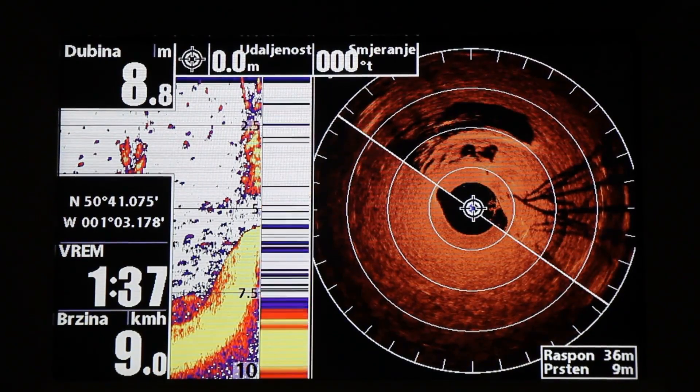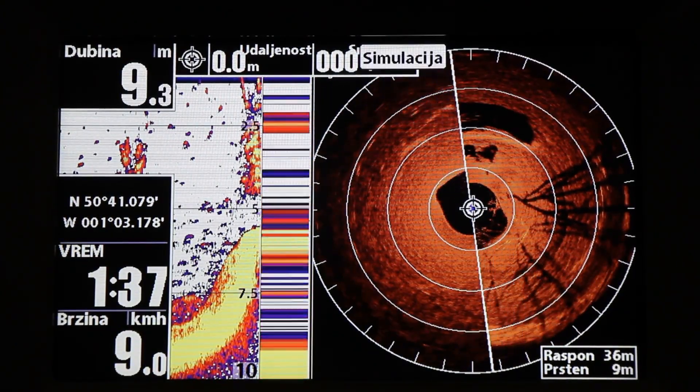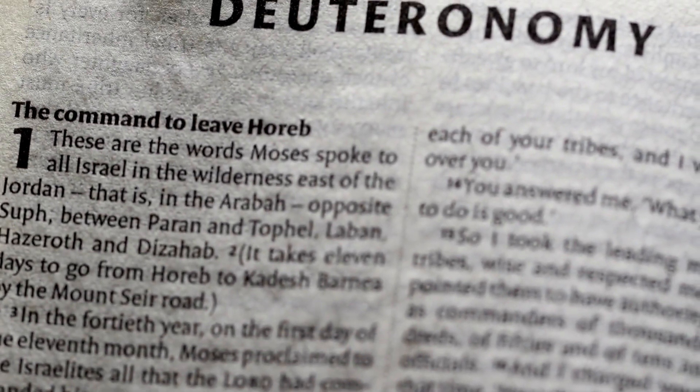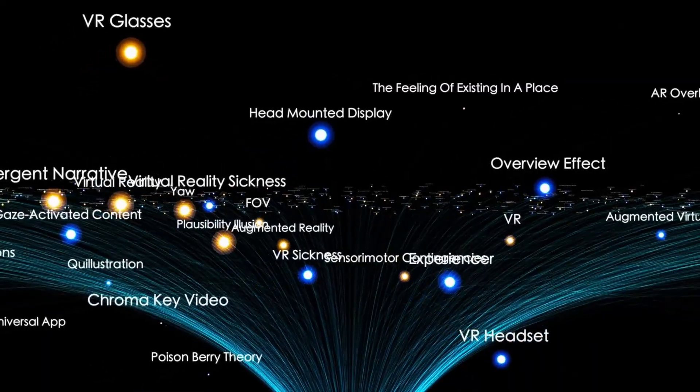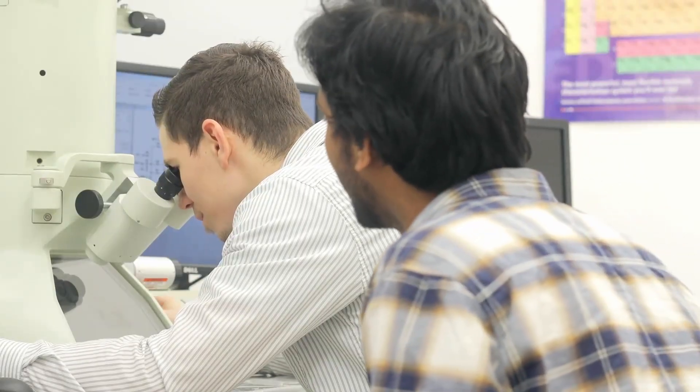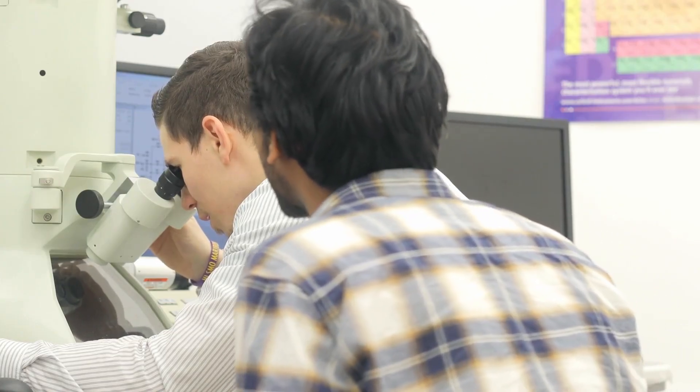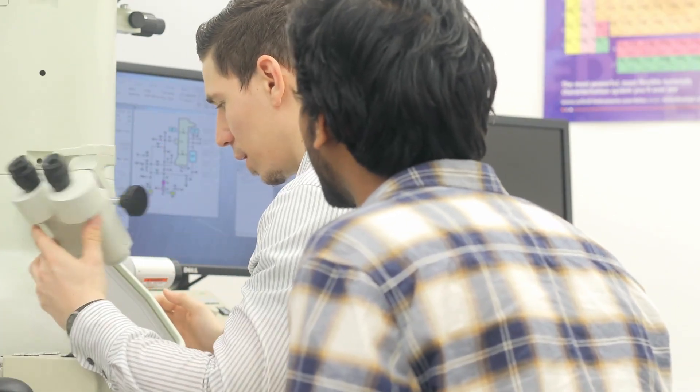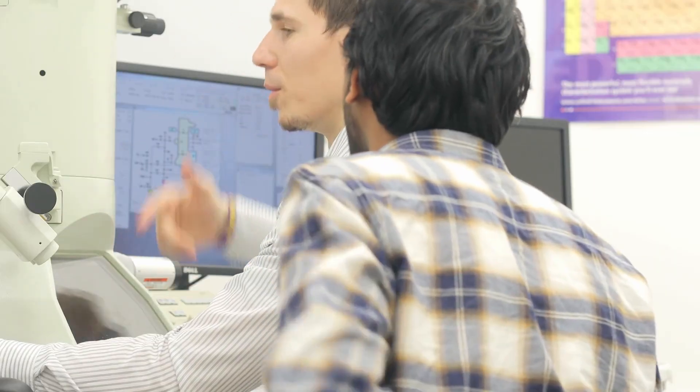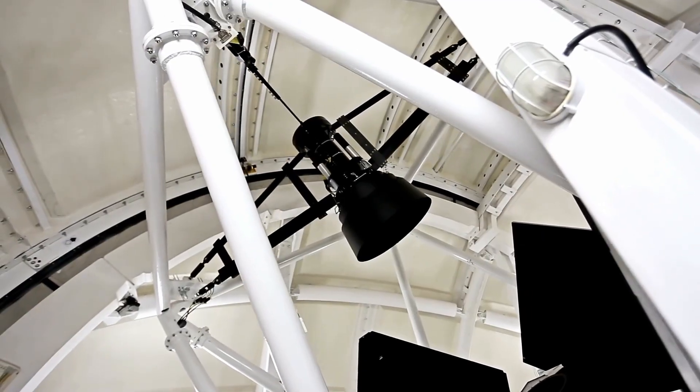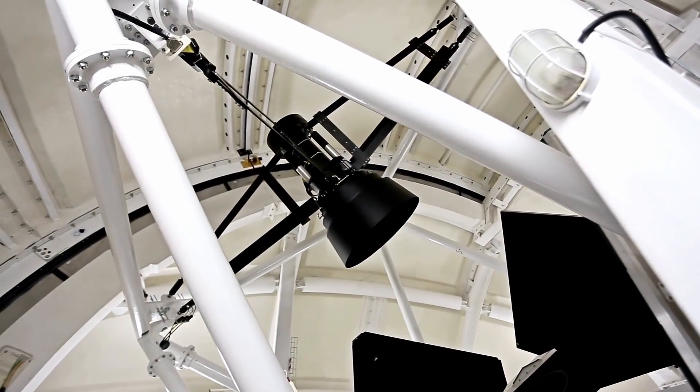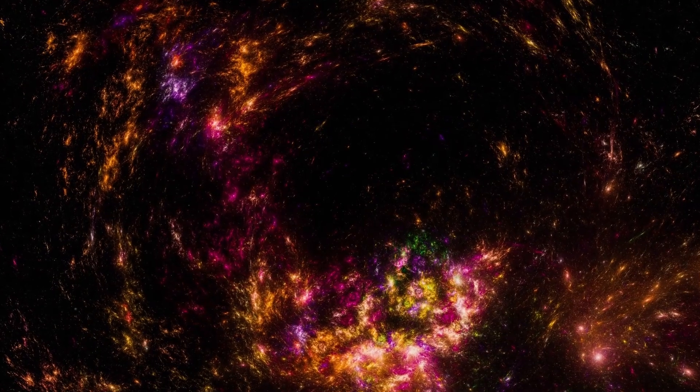In space, no object moves perfectly straight except 3i Atlas. For months, it maintained a trajectory so precise that even NASA's supercomputers struggled to account for it. Normal comets wobble and drift due to jets of vapor pushing them off course, a phenomenon known as non-gravitational acceleration. But this object has remained nearly motionless relative to its predicted orbit, deviating by less than 2 kilometers per day, 100 times more stable than any comet ever observed. It's as if it's correcting itself, staying locked to a specific route through the solar system. Astronomers began comparing it to Oumuamua and Borisov, two previous interstellar visitors. But even those displayed erratic behavior.